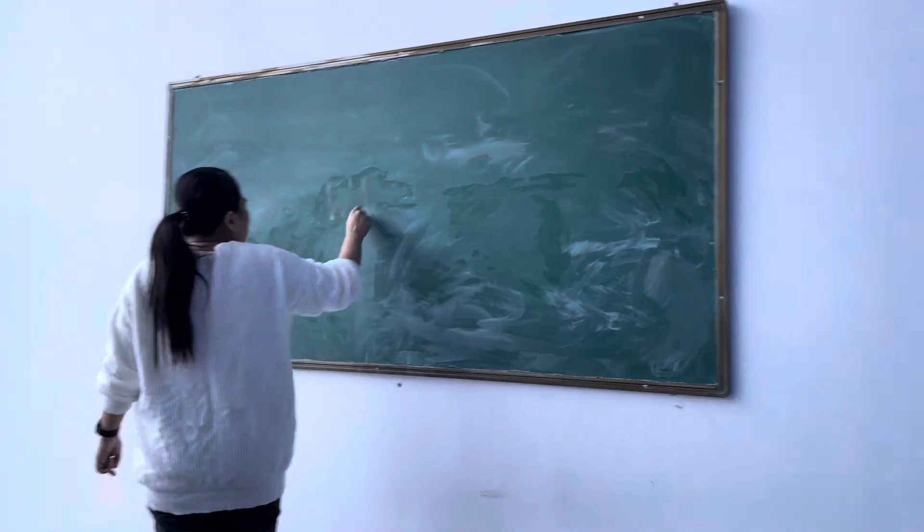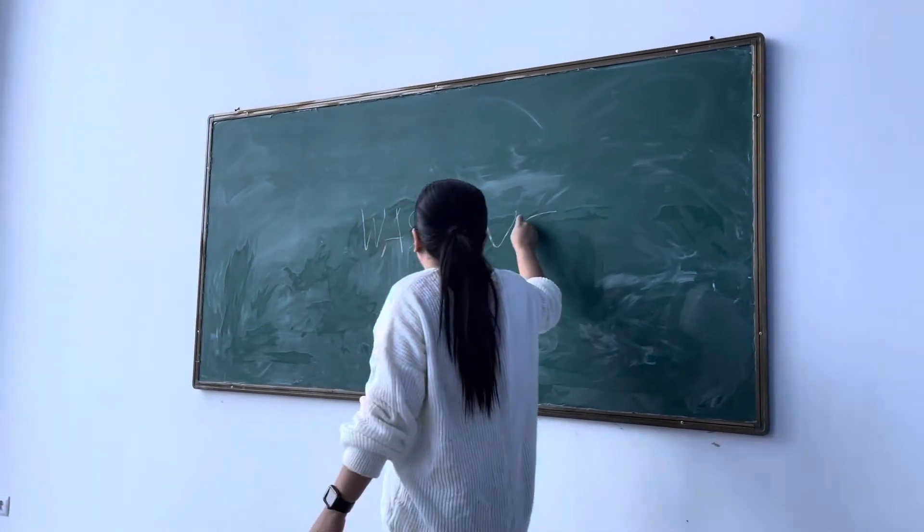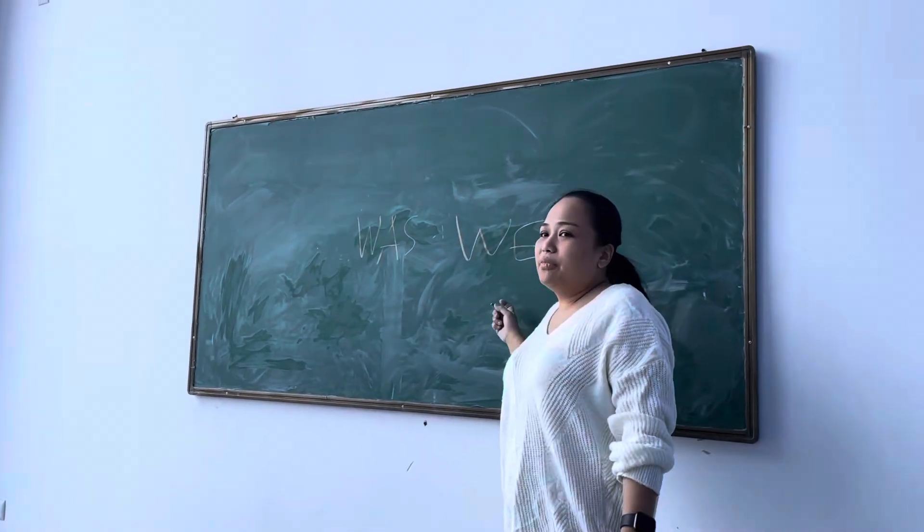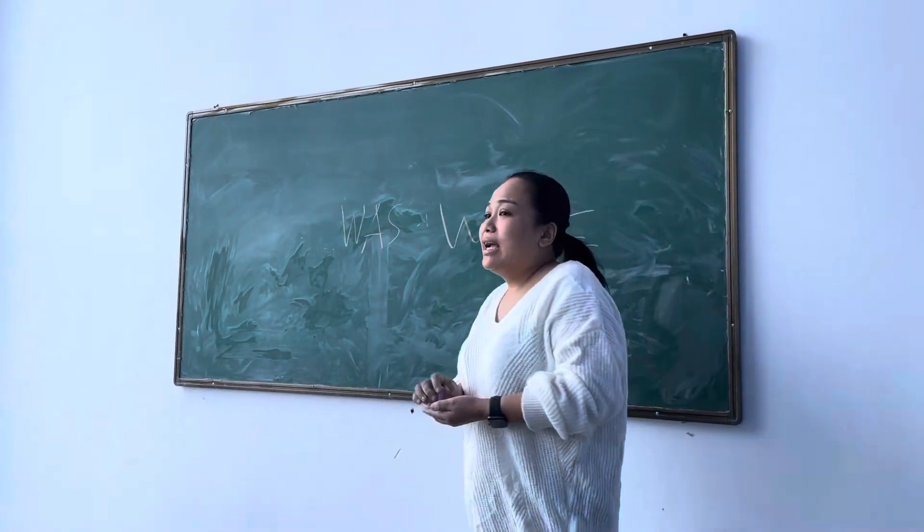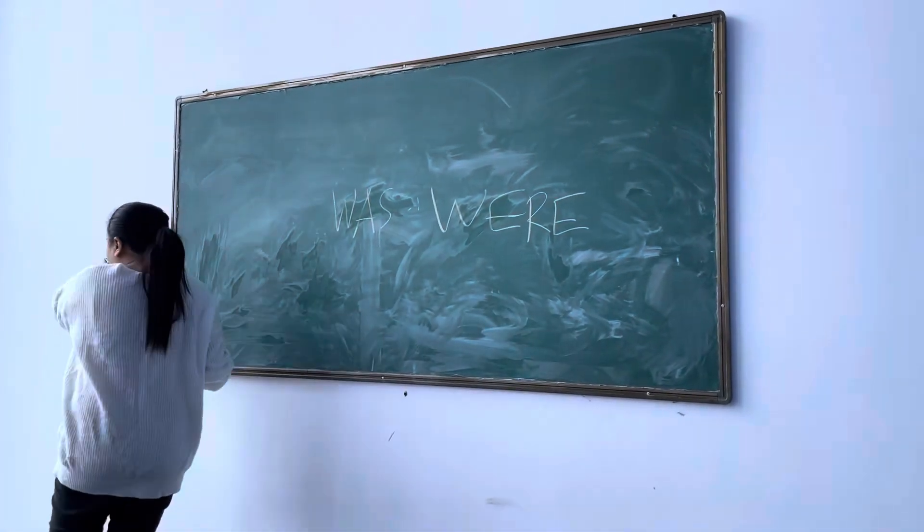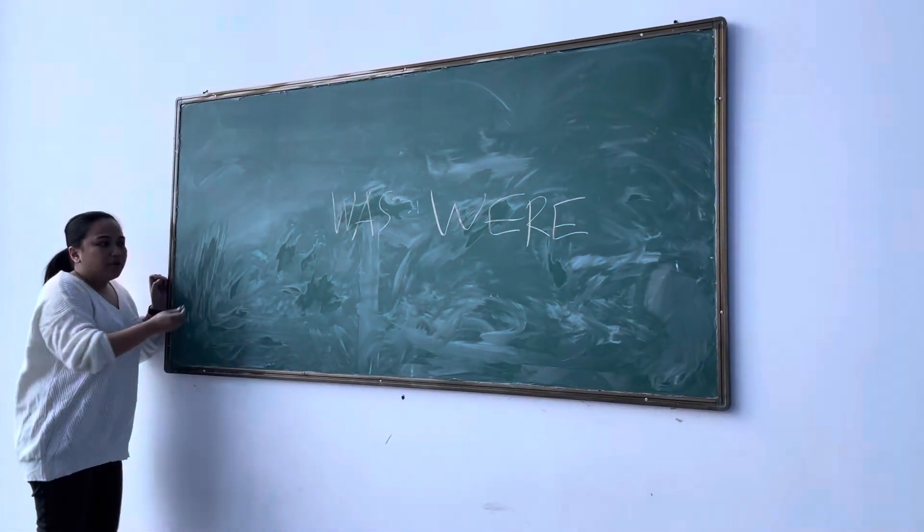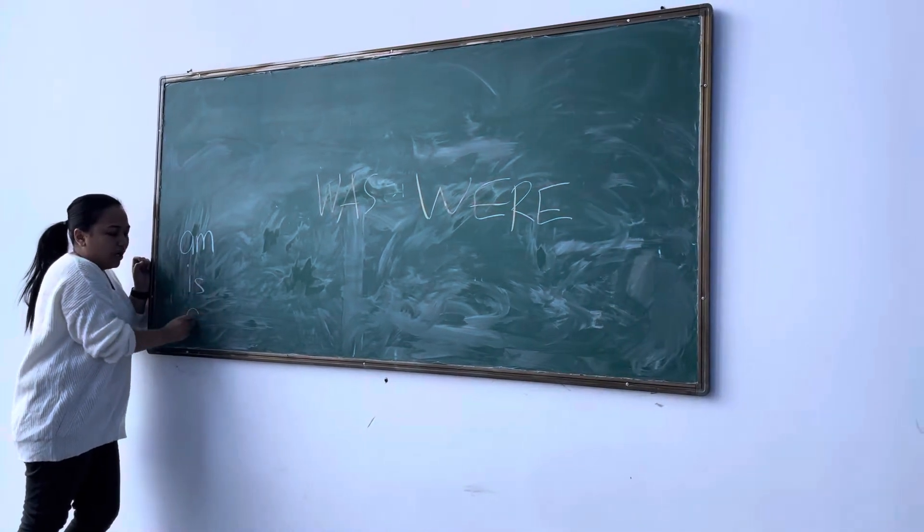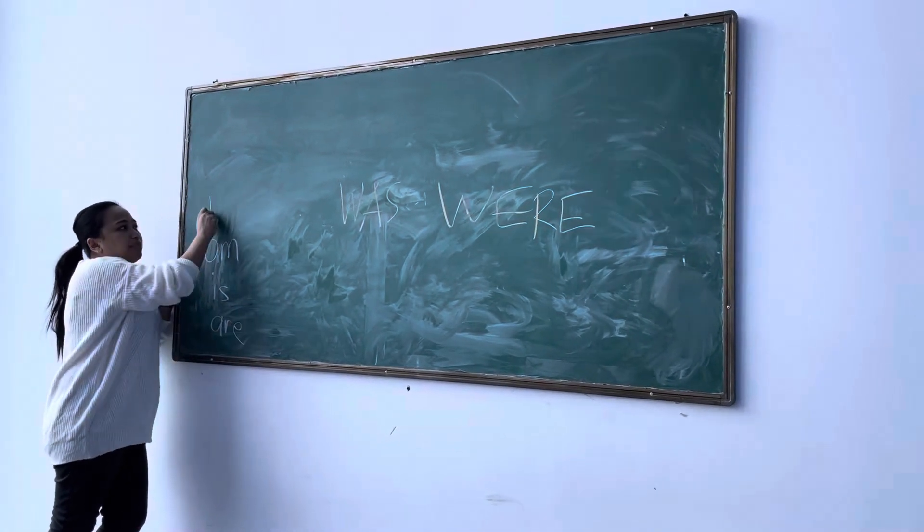This was and were. These are verb to be in the past. In the present, I'm on the board. In the present: am, is, and are. This is present.